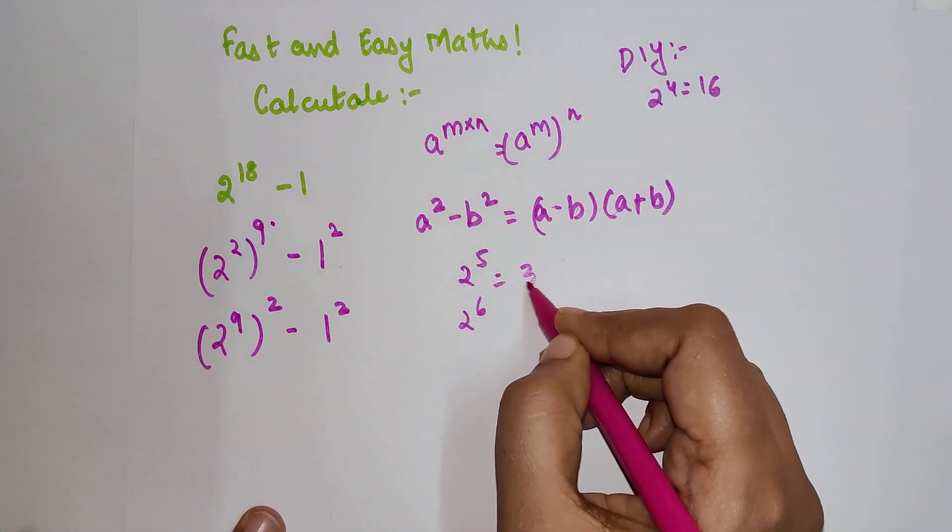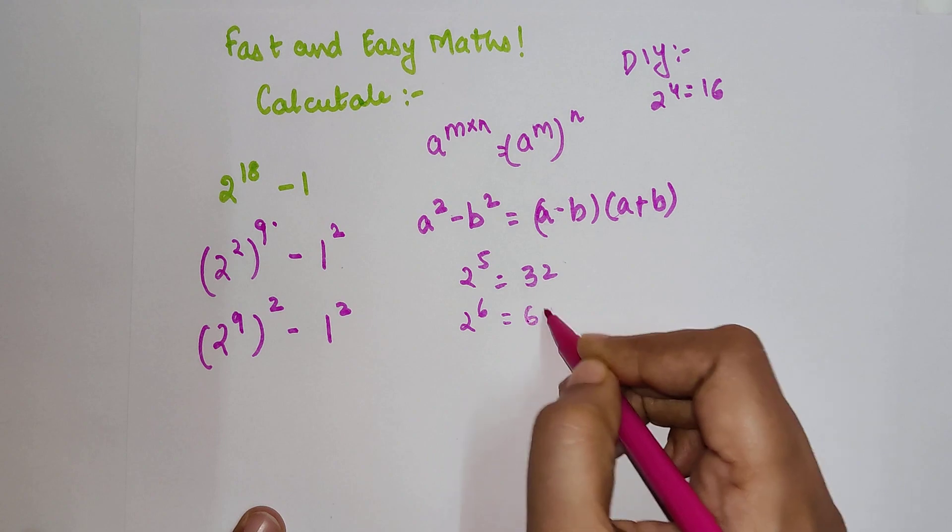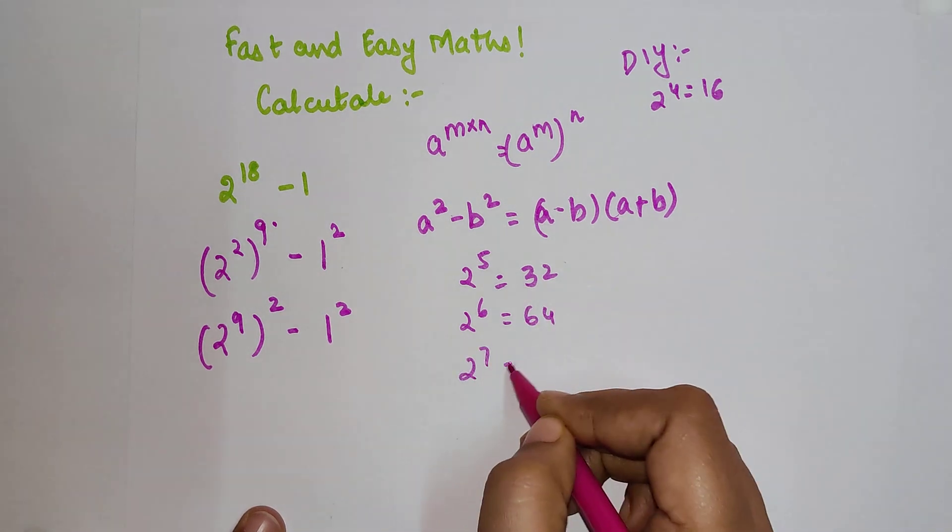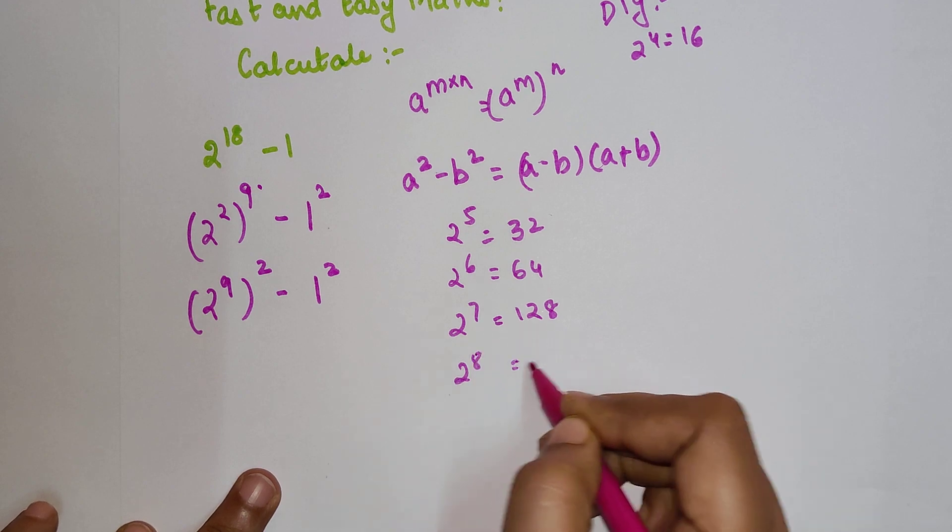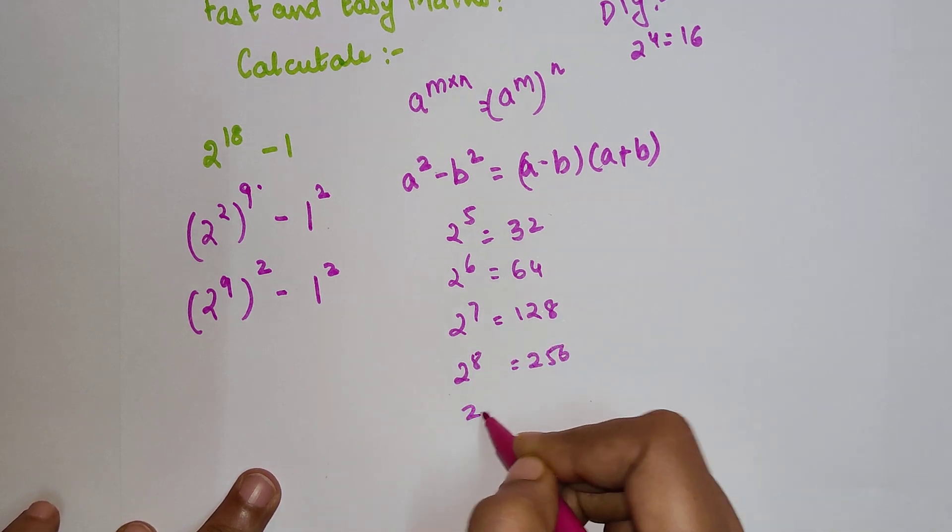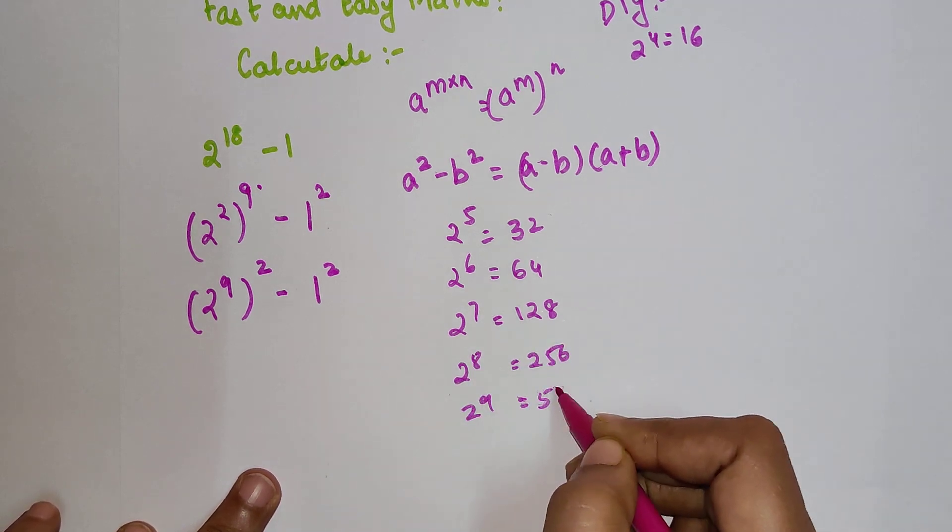So 2^5 will be 32, double of that. This will be 64. 2^7 will be 128. 2^8 is 256. So 2^9 will be 512.